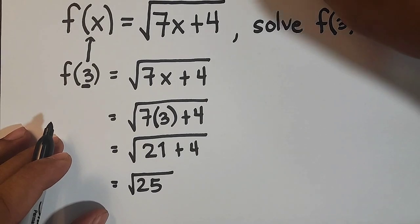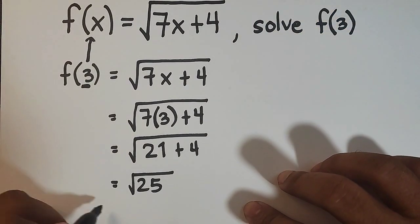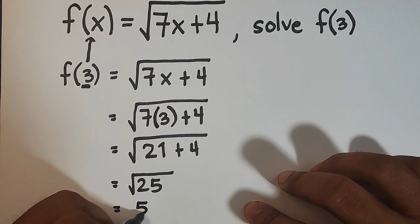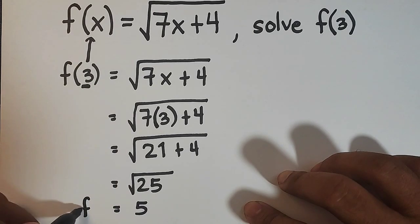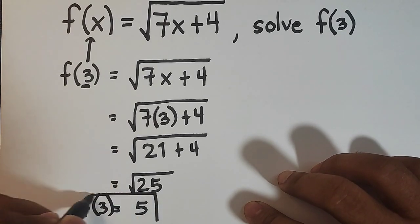So what will happen here to finally find your answer? Get the square root of 25, and that is 5. So meaning the value of f of 3 is 5.